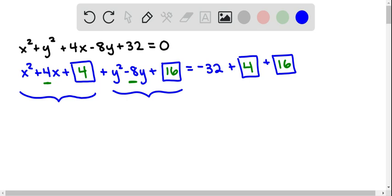Now we write these trinomials in their factored form. So we have x plus 2 quantity squared plus y minus 4 quantity squared equals negative 12.